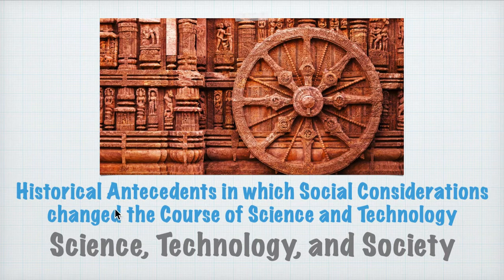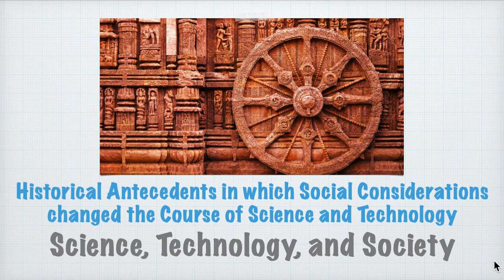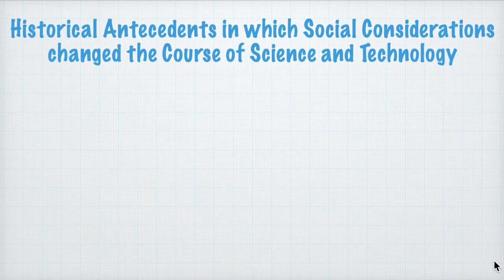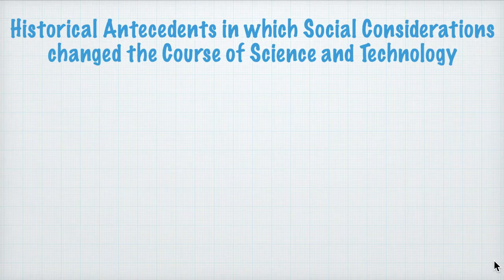The title of this module is 'Historical Antecedents in which Social Considerations Change the Course of Science and Technology.' Quite a mouthful, but in this video specifically, we're just going to define the very basic and important terminologies that we'll be using in this course.